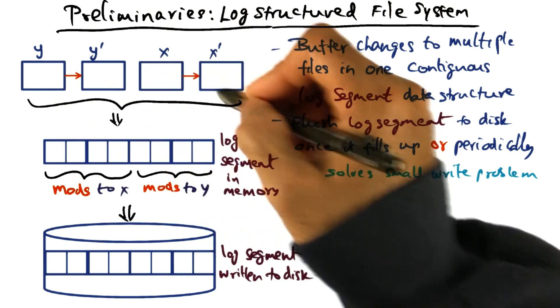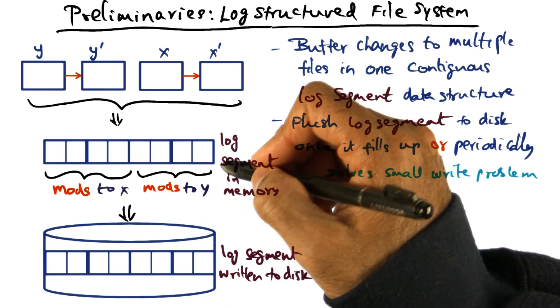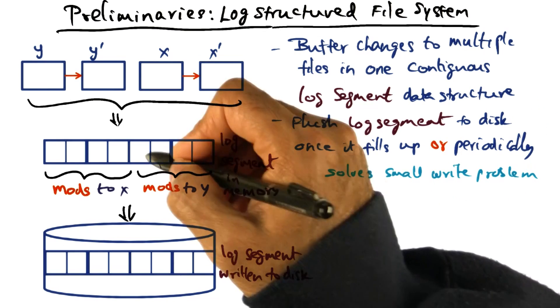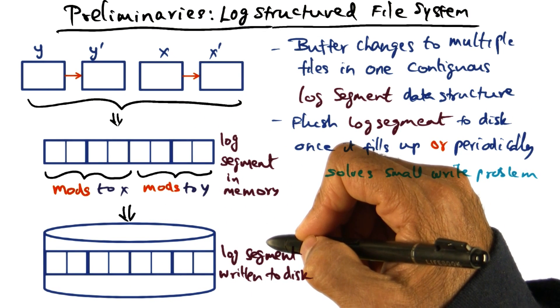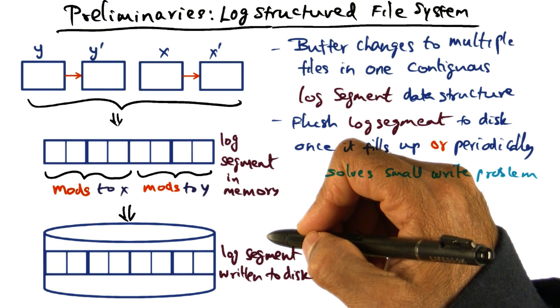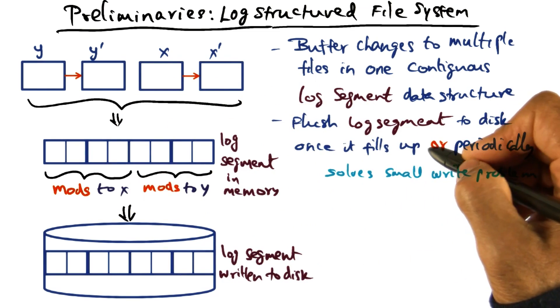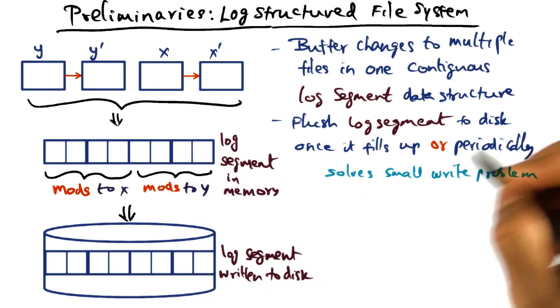And when a lot of file activity is happening and the log segment fills up very rapidly, after it passes a threshold, then you write it out to the disk. So in other words, we use a space metric or a time metric to figure out when to flush the changes from the log segment into the disk.